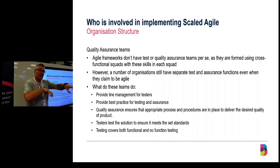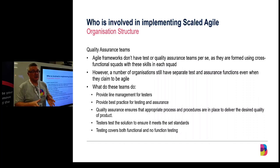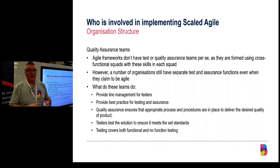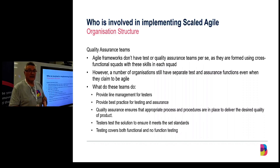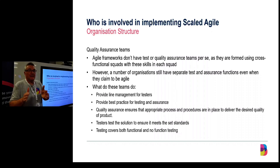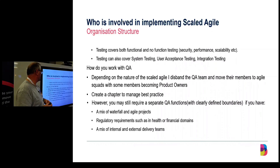If you have a lot of third-party products, someone's got to test those elements and deliveries, and you need system-level testing, customer testing, user acceptance testing — these aren't typically squad activities. You might still need that function. QA teams also do wonderful things like performance testing, scalability testing, accessibility testing — things where you might not have enough experts to fit in each squad or where there isn't enough work in a single squad. Look at your structure, look at what you're trying to deliver, and be flexible.